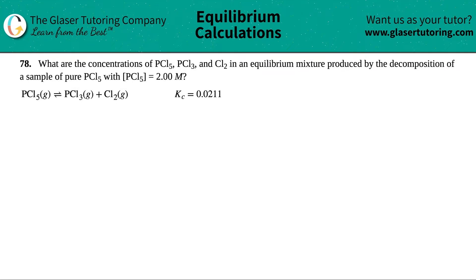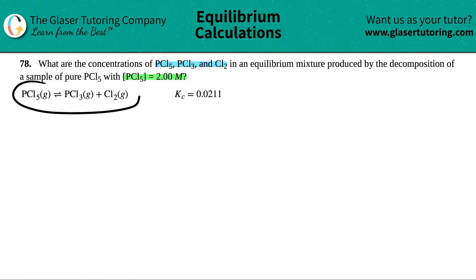Problem number 78: what are the concentrations of PCl5, PCl3, and Cl2 in an equilibrium mixture produced by the decomposition of a sample of pure PCl5 with an initial concentration of 2.00 molarity? They also give us the equation with the Kc value.